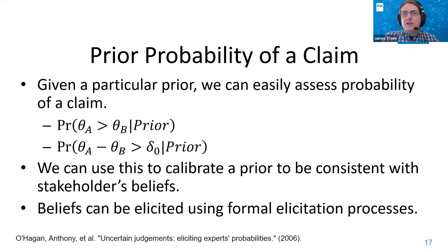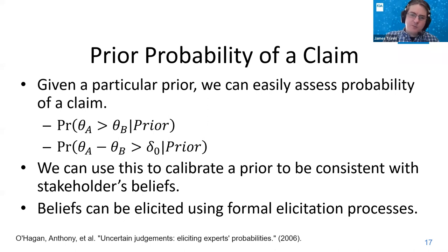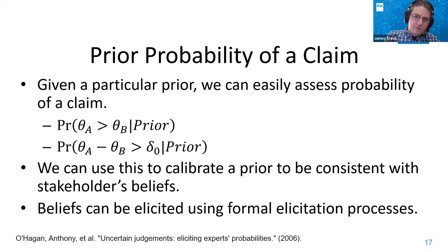The prior probability of a claim is fairly straightforward to assess. Given a particular prior, we can assess the probability that a particular parameter — say the treatment effect — is greater than the placebo effect, given our prior information. We can use this to calibrate a prior to make sure it's consistent with stakeholders' beliefs. This lends itself more easily to using formal elicitation processes, such as those discussed by O'Hagan et al. in the book on 'Uncertain Judgments.'